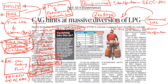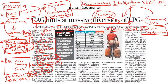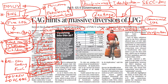Under the scheme, genuine beneficiaries were supposed to be identified using data from the socio-economic caste census of 2011. After identification, a deduplication exercise was supposed to be carried out to weed out fake beneficiaries through the verification of Aadhar cards. But according to the CAG audit, major errors have been committed in the process of identification and deduplication. As a result, a number of fake beneficiaries have managed to get free LPG connections under the scheme, highlighting massive leakage and diversion of LPG cylinders for commercial use.